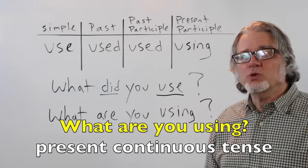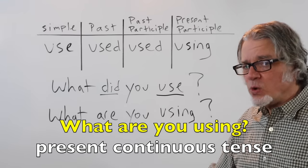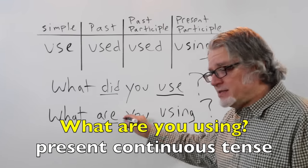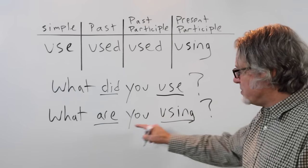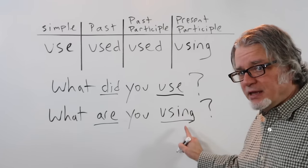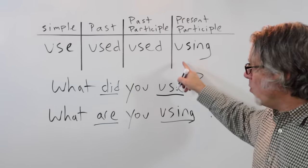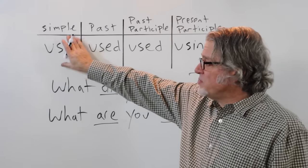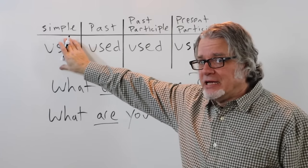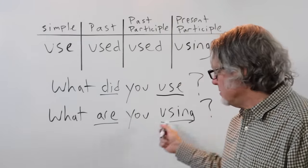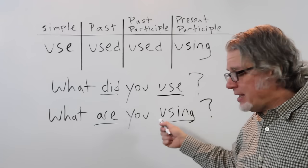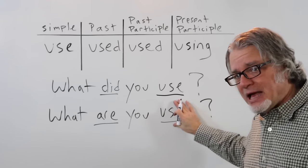What are you using? This question is in the present continuous tense. Here's the verb be, and then here's the main verb. You can think of this as the present participle, or you can think of it as the simple form with an -ing ending. You just have an -ing after this S.